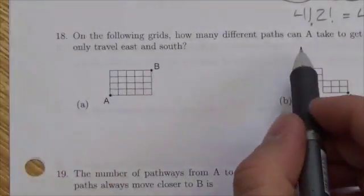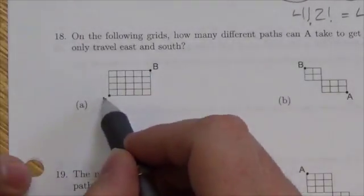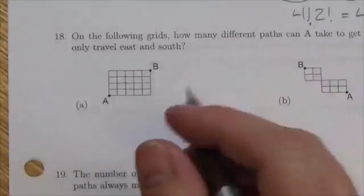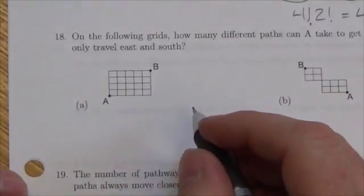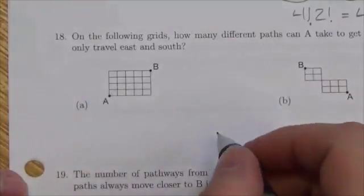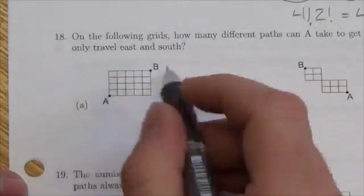On the following grids, how many different paths can take you from point A to point B, assuming you can only travel east and south? I've changed this up a little bit here. I said east and south when I threw this down here.